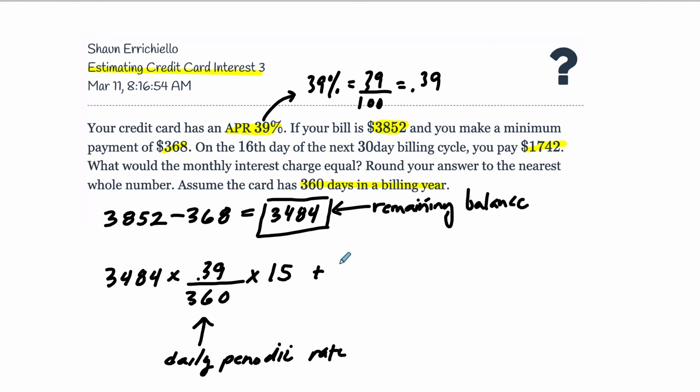So for 15 days, this is what our interest is doing. Then we pay some more off. So it's going to be $3484, that was our remaining balance, and we pay off $1742. This is going to lower our interest for the next 15 days. So we multiply it by the yearly APR as a decimal, divide it by 360. That's still our daily periodic rate. And then multiply it by 15 because there are still 15 days left in the billing cycle.